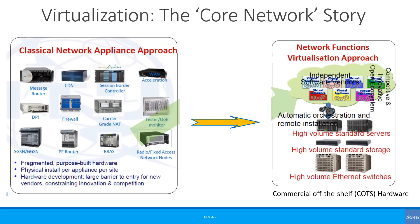Each vendor used to have proprietary hardware and software for each of these functions. There used to be many such boxes in a network data center consuming lots of space and power, and they used to be difficult to upgrade and replace. With network functions virtualization, the purpose-built hardware got replaced by COTS or commercial off-the-shelf servers. This allowed operators to get standardized hardware at much lower cost due to economy of scale, with generic hardware specialists replacing dedicated ones. Different vendors could now focus on software, making their products more flexible and streamlined.